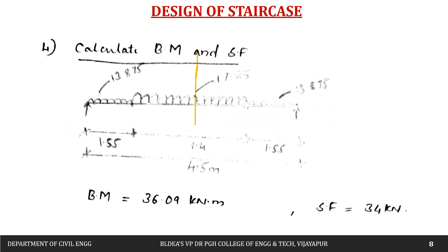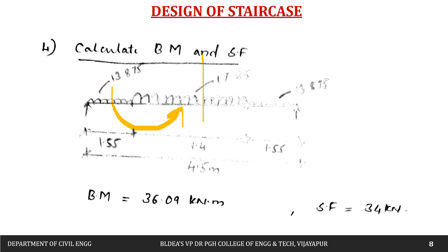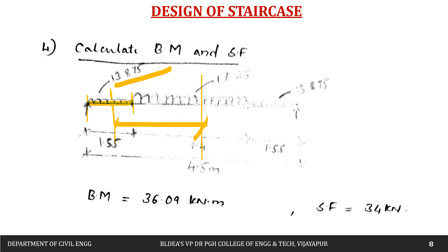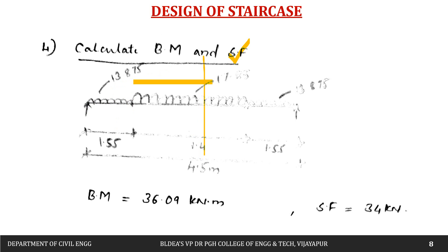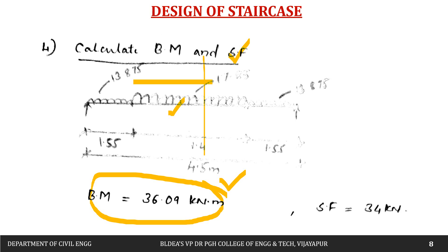The bending moment at the center is calculated as RA × (1.55 + 1.4/2) minus the moment due to the landing load 13.875 × 1.55 × (1.55/2 + 1.4/2) minus the moment due to the going load 17.85 × 1.4/2 × (1.4/4). This gives a bending moment of 36.09 kN·m. The shear force is 34 kN.